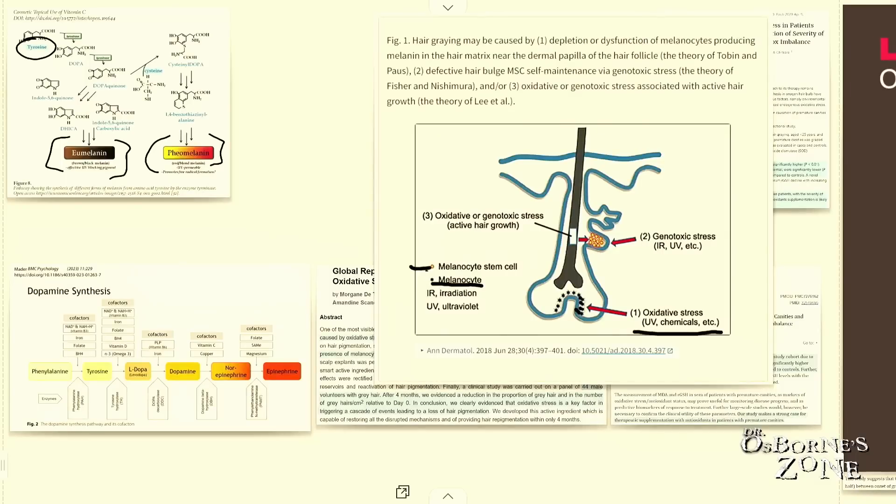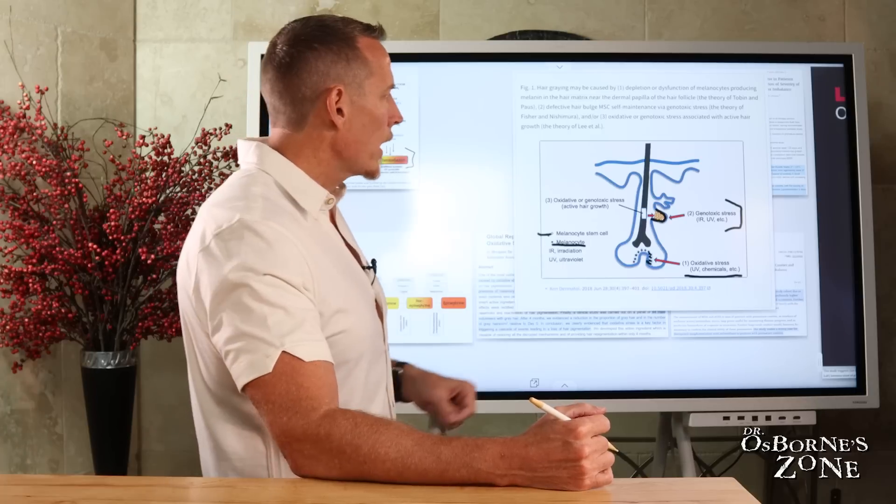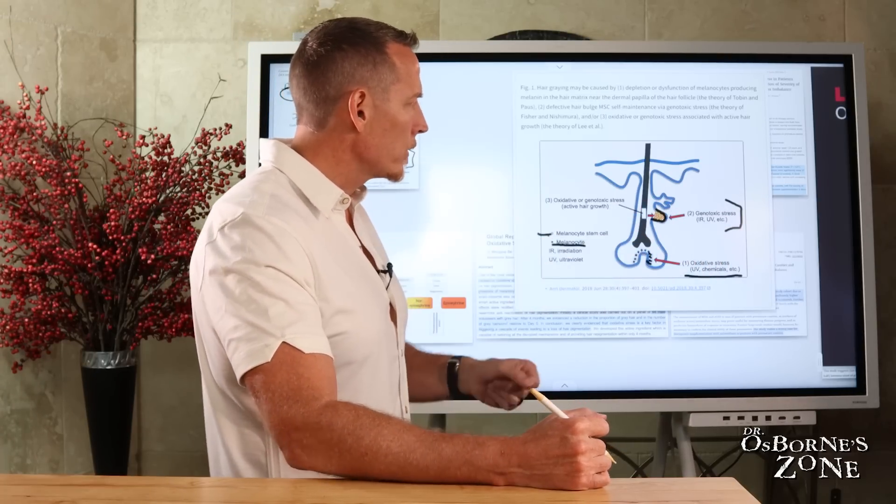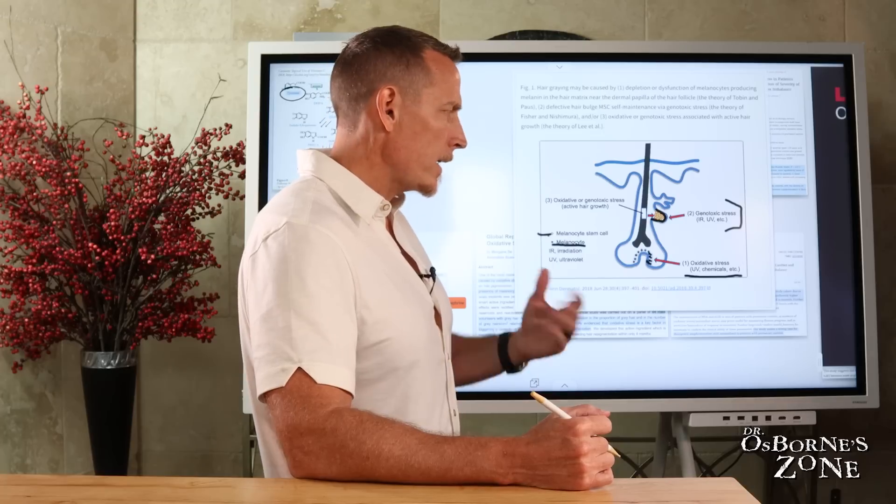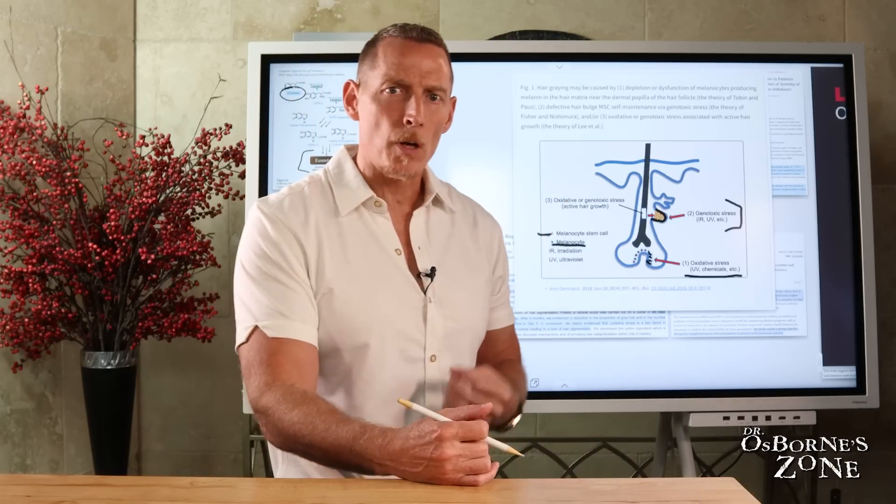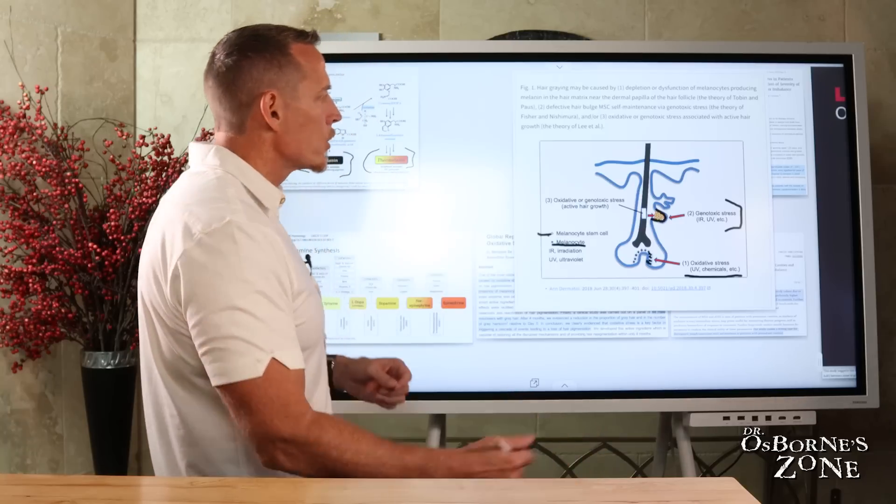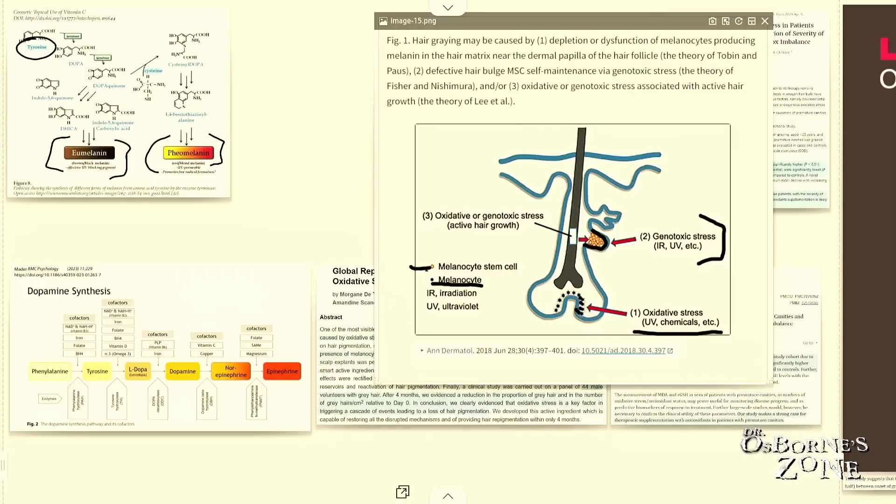Then we can have genotoxic stress that damages melanocyte stem cells, which is right here in the hair follicle. I've highlighted these little yellow structures. Those are stem cells that go on to make melanocytes. And so genotoxic stress can damage those. And there are a number of different things that can cause genotoxic stress as well. The same types of things, the chemicals in our environment, the chemicals we're being exposed to in our foods, et cetera. And then we have oxidative or genotoxic stress that can actually affect the hair itself. So you can see in this shaft, this is the hair follicle. And this dark structure coming out of the follicle, that's the shaft of the hair.